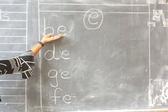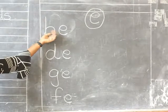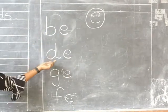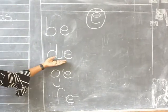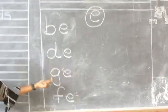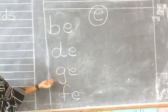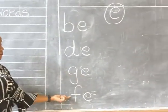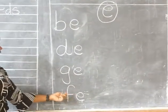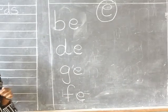Bu a — syllable ba. Du a — syllable da. Gu a — syllable ga. F a — syllable fa.